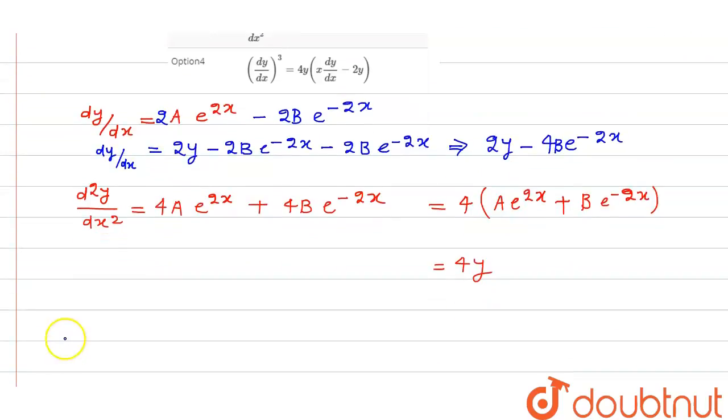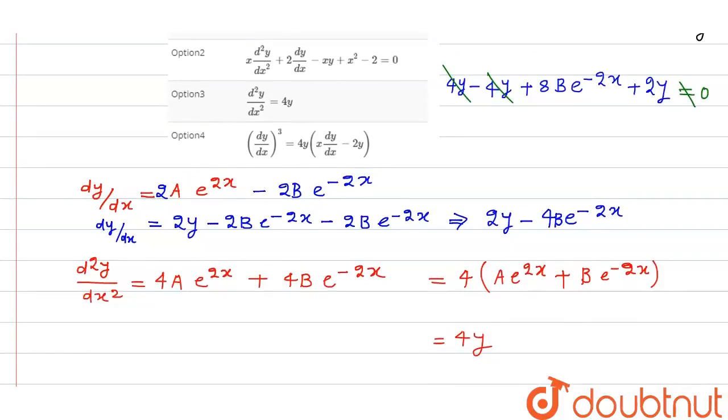Let's rewrite here, this is d²y upon dx square, that is x into 4y plus 2 into 2y minus 4b e to the power 2x.